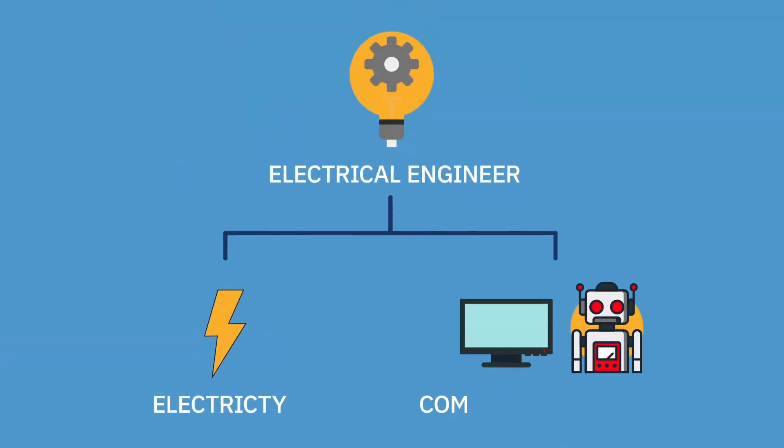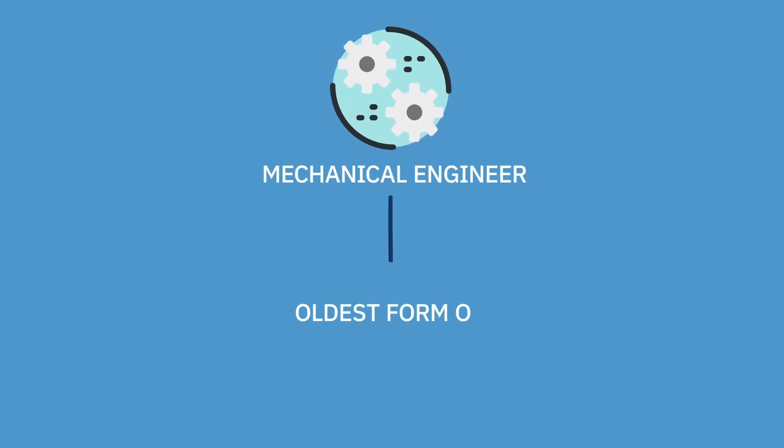The other portion of electrical engineering is computers and robotics. An electrical engineer will design the circuitry inside your computer or inside a robot. Next is mechanical engineering. Mechanical engineering is the oldest form of engineering there is. A mechanical engineer designs motors, designs windmills. For example, the engine in a car — a mechanical engineer is responsible for that design.